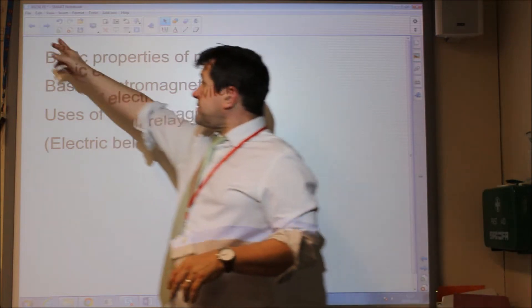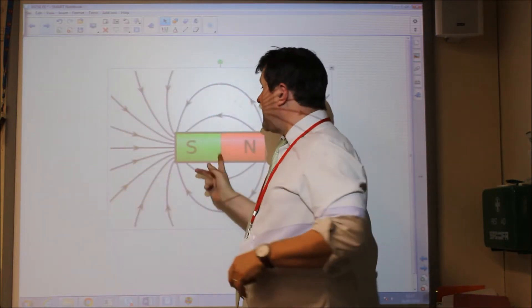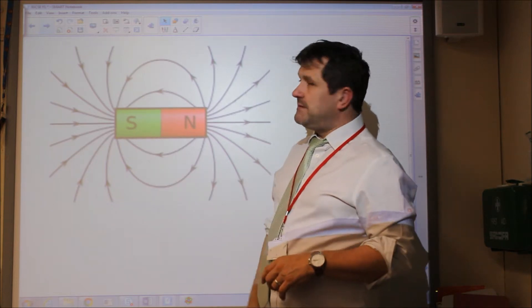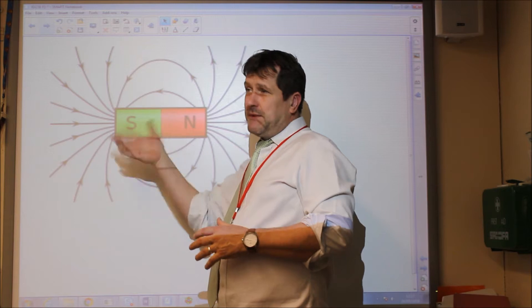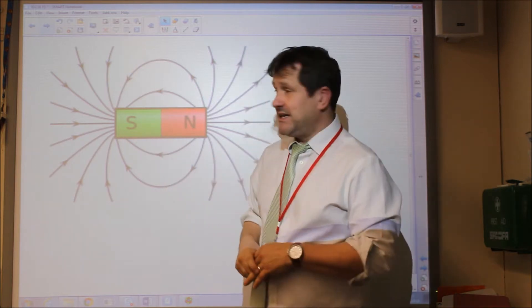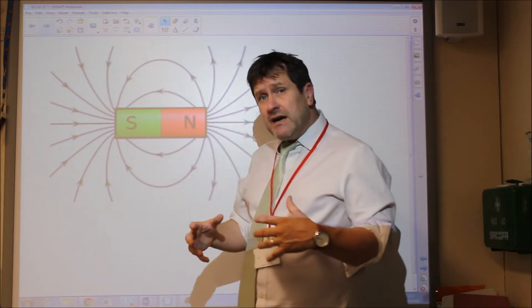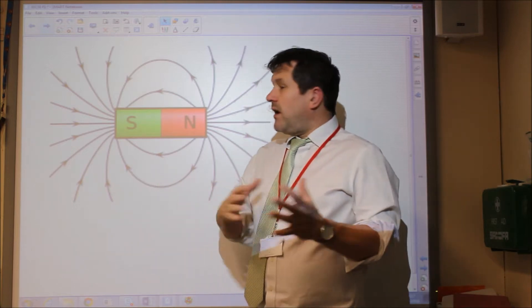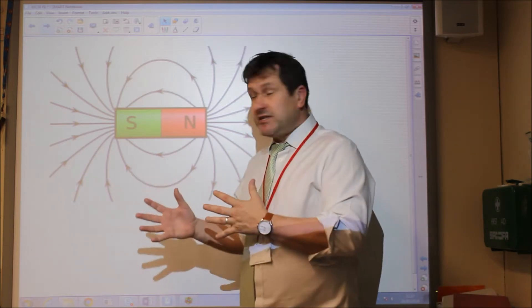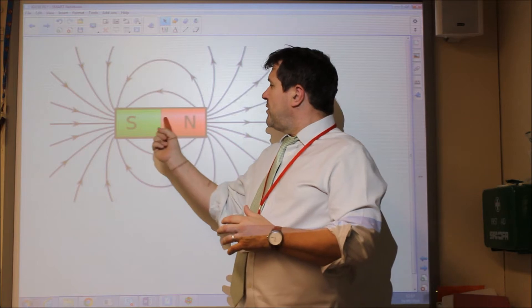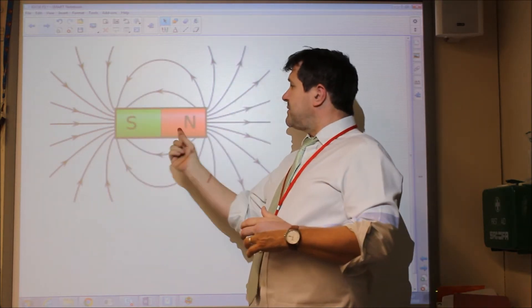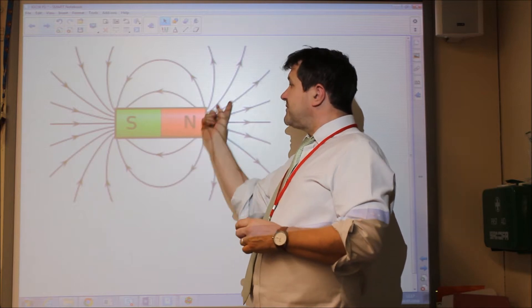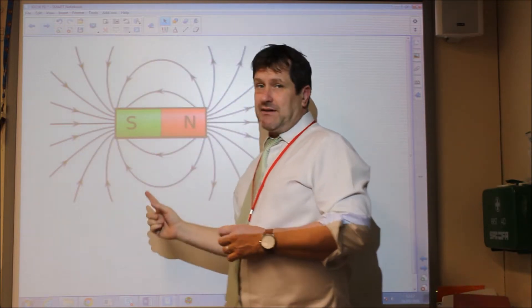So to start off with, magnets. Magnets made of iron, and in the case of a permanent bar magnet such as this, it's made of hard iron. And inside it, the dipoles are all aligned in the same direction. And therefore, you get this overall effect of magnetism. So we've got magnetic field which comes out of north and comes back in its south.